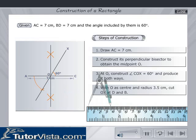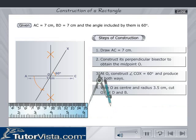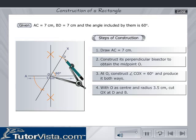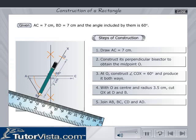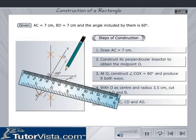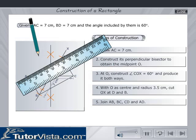With O as center and radius 3.5 cm, cut OX at D and B. Join AB, BC, CD and AD.